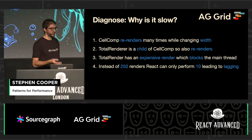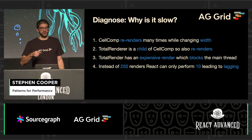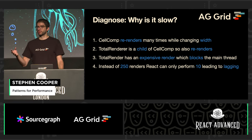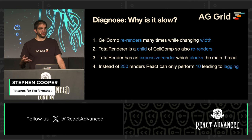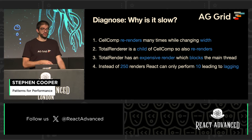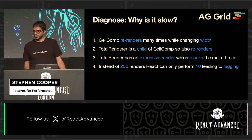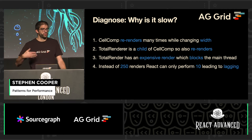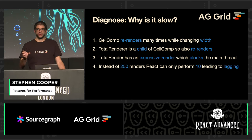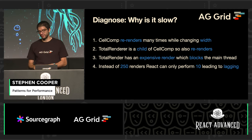So why is it slow? The cell component re-renders many times. We saw that even without our custom renderer it was still rendering a lot, but it was rendering fast. You introduce this total renderer, which is a child, so that's also being rendered a lot. But then it has an expensive render, which is now blocking the main thread. So instead of all fast renders, we've got some slow ones, which is causing this behavior.